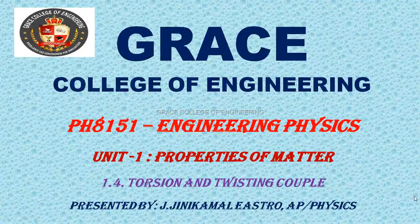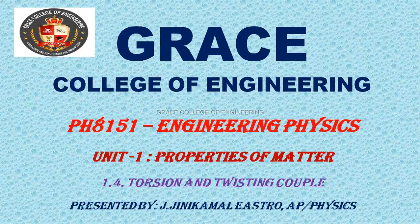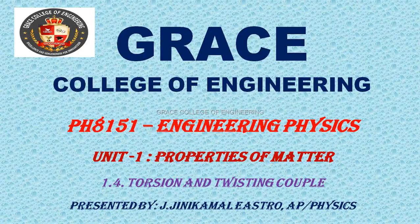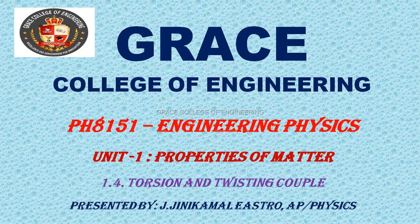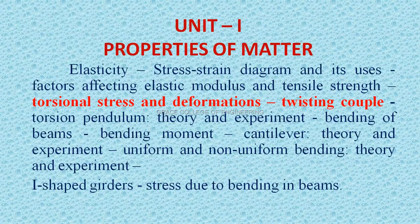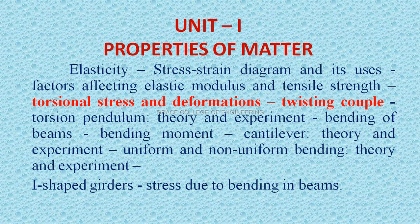Grace College of Engineering PH 8151 Engineering Physics Unit 1 Properties of Matter. In this we are going to see the topic torsion and twisting couple. Already in Unit 1 we have seen the topic elasticity, stress, strain, factors affecting elasticity and tensile strength. Now we are going to see torsional stress and deformations then twisting couple.